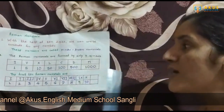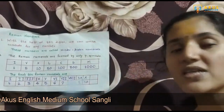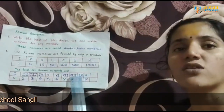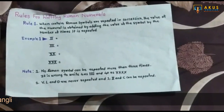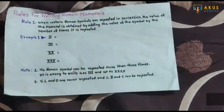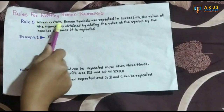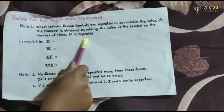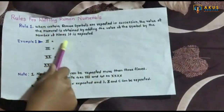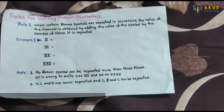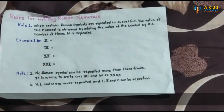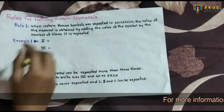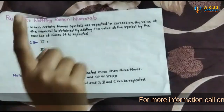Now there are some rules for forming different numbers in the Roman system. Rule 1: When certain Roman symbols are repeated in succession, the value of the numeral is obtained by adding the value of the symbol by the number of times it is repeated. For example, two times I — as shown in the chart, I represents 1, so II represents 1 plus 1, which equals 2.